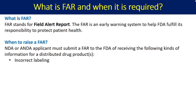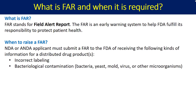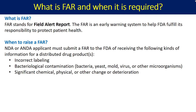The first condition: if incorrect labeling took place during manufacturing and the batch is now under distribution. The second condition: if there is a risk of bacteriological contamination — such as contamination from bacteria, mold, virus, or any other microorganism — then the company can raise a FAR.